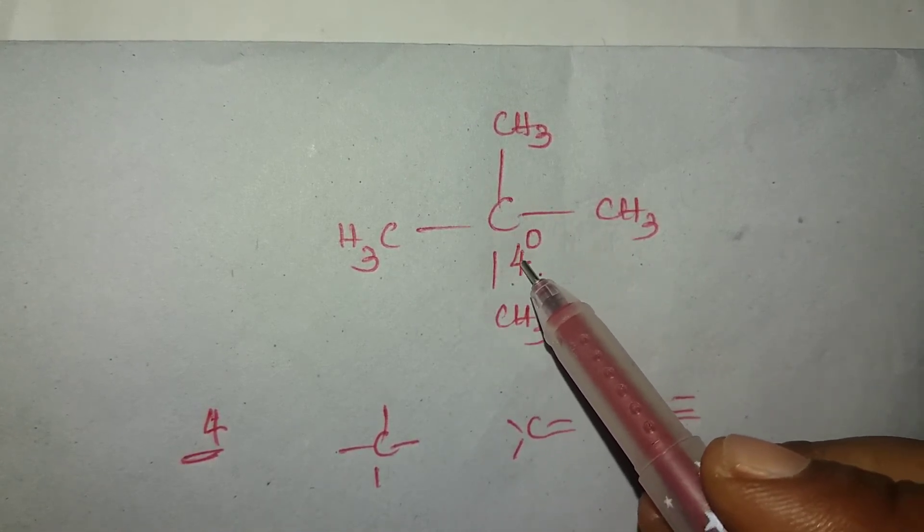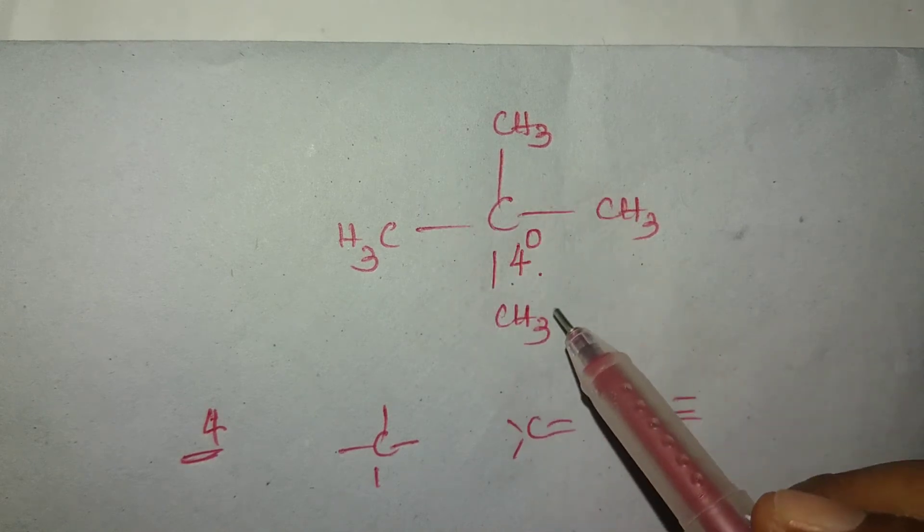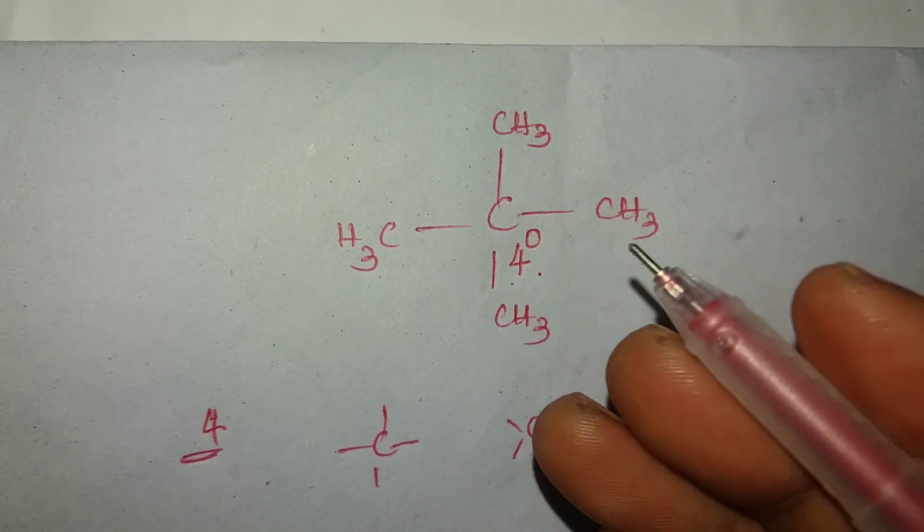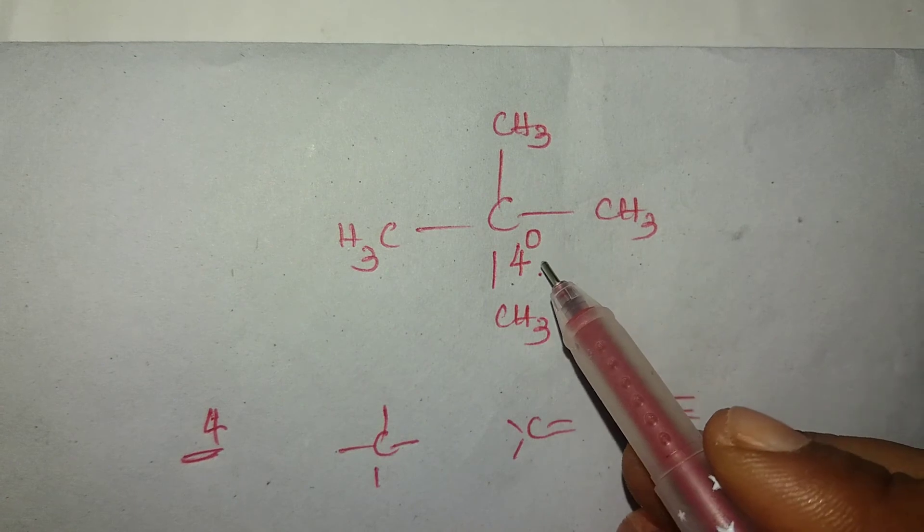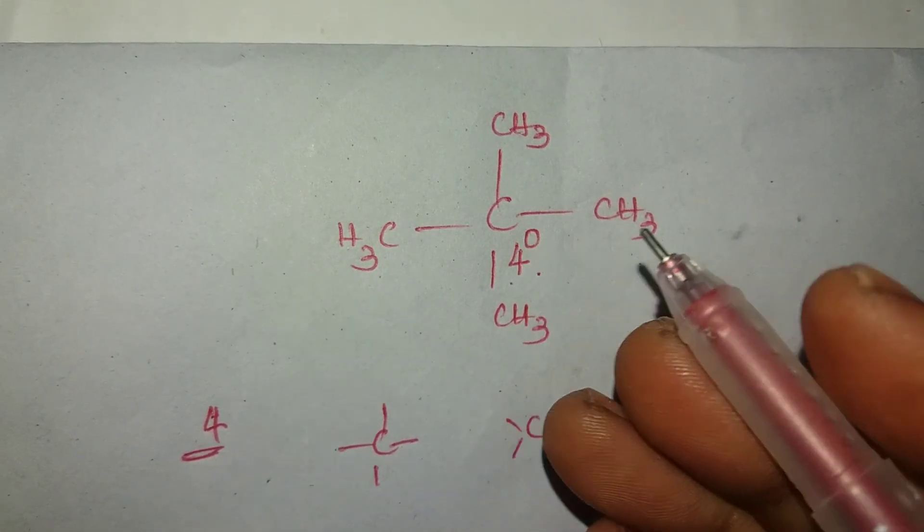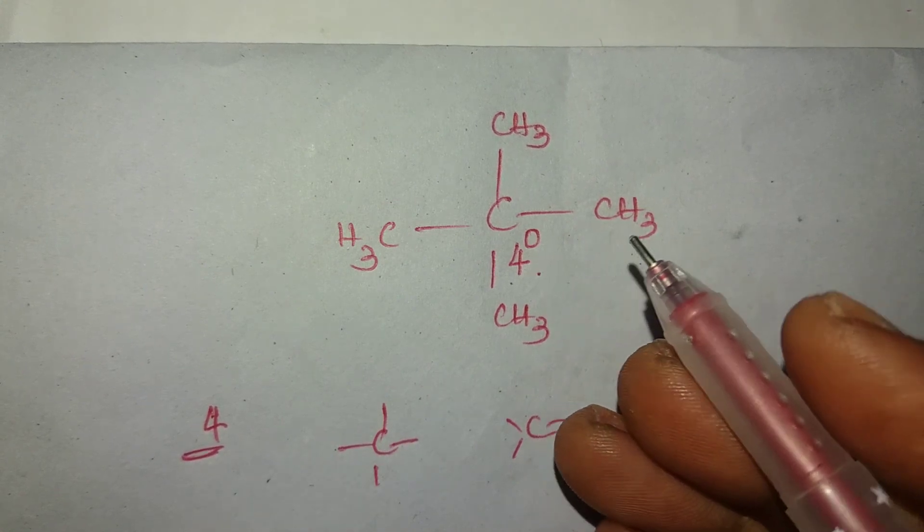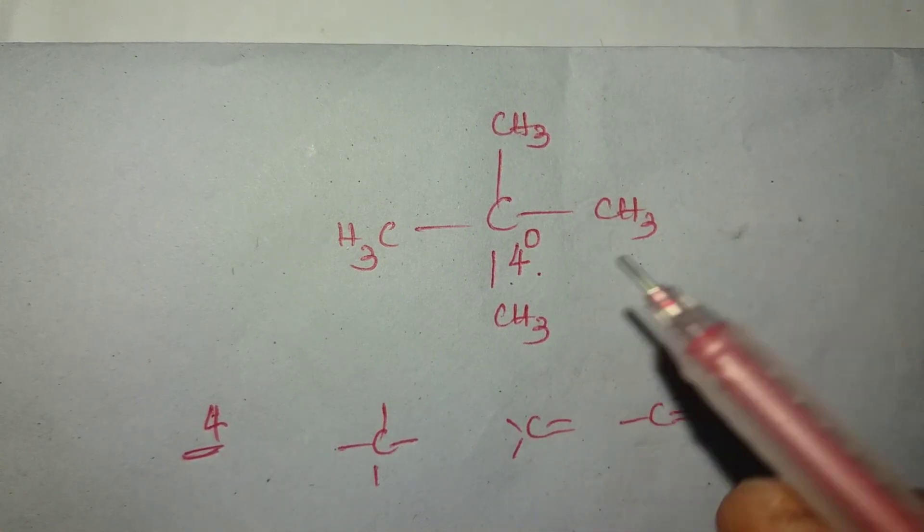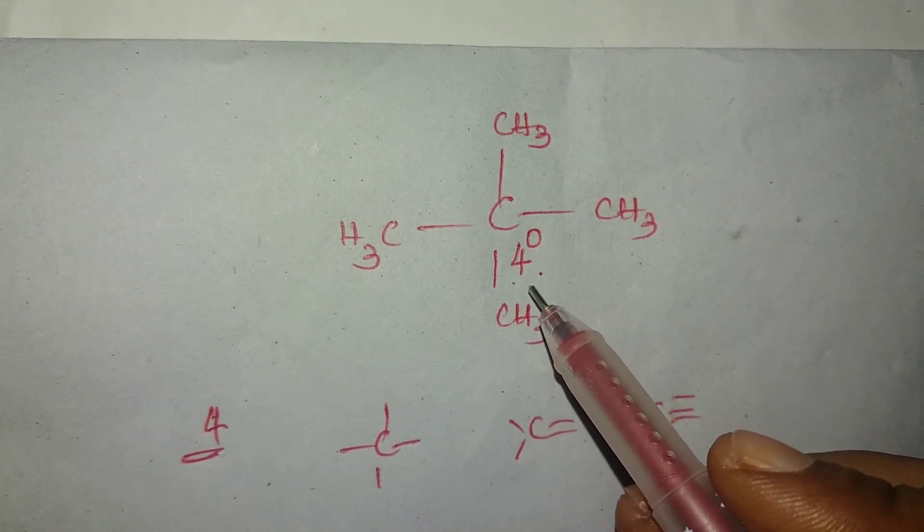The four single bonds of this quaternary carbon are already satisfied with four methyl groups. So there is no possibility to attach any hydrogen or alcohols to this quaternary carbon. That's why quaternary hydrogen and quaternary alcohol are not possible, even though quaternary carbon is possible.